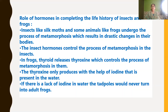Thyroxin is produced in frogs with the help of iodine present in water, so we understand that iodine is very important for the production of thyroxin. Thyroxin is a hormone produced by the thyroid gland. If there is a lack of iodine in water, then the tadpoles would never turn into adult frogs — the change of tadpole to adult frog, which is metamorphosis, would not occur.